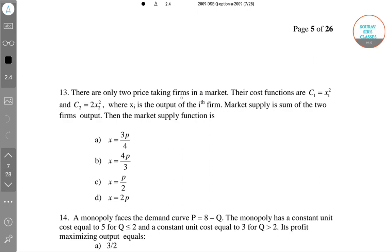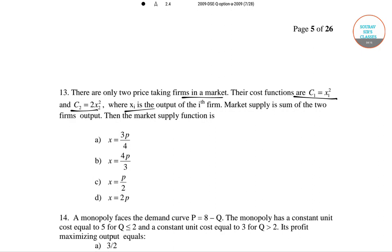There are only two price taking firms in the market. The cost function is C1 equals X1 squared and C2 equals 2X2 squared, where Xi is the output of the ith firm. The market supply is the sum of the two firms' output. Then what is the market supply function?